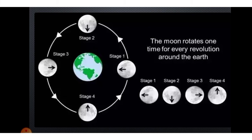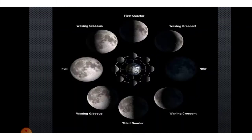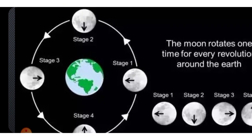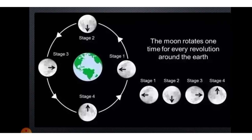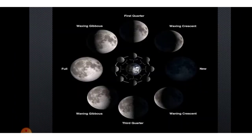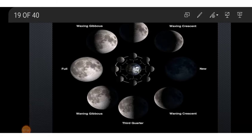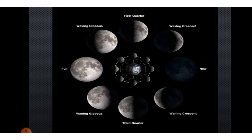The moon rotates one time for every revolution around the earth, so it has different stages. A satellite is a celestial body that moves around a planet in the same way as the planet moves around the sun. So the moon is a natural satellite of the earth.